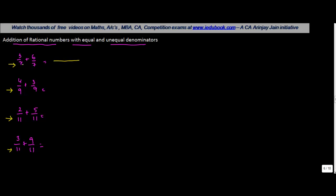And you add the numerators. So 3 + 6. Whenever you have to add rational numbers with equal denominators, the denominator of this addition is going to be the common denominator of the fractions, and the numerator is nothing but the sum of the two numerators.